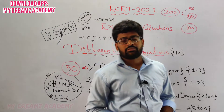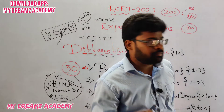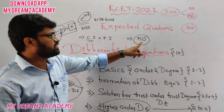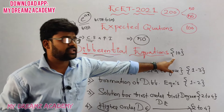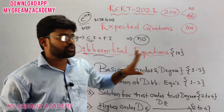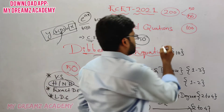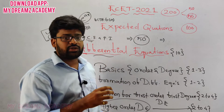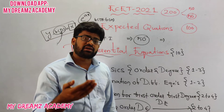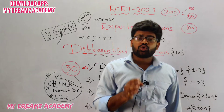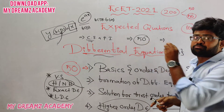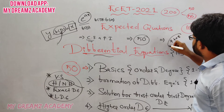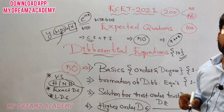From differential equations, you are getting 10 marks total. We are giving 50 questions from differential equations, and from these 50 questions you will definitely get 10 marks. These expected questions are planned based on average and below average students, though above average students can also benefit. If you solve these 50 questions perfectly, you can get minimum 7 to 8 marks, and if luck is there, you can get 10 out of 10 marks.